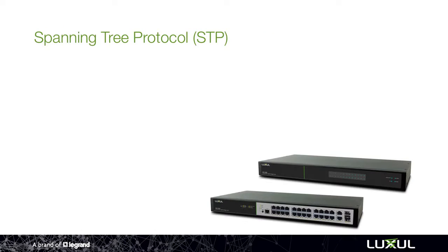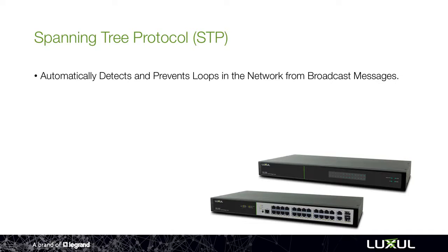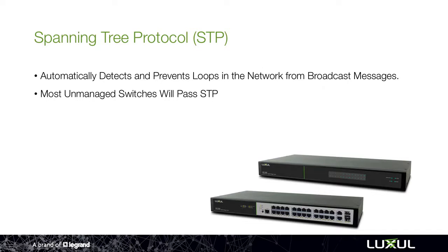What does spanning tree do and why is it important? Spanning tree automatically detects and prevents loops in the network from broadcast messages. It's a fancy network term, but it's very simple in what it actually does. With an unmanaged switch, they will pass spanning tree — meaning the switch will just pass that broadcast message along. It won't try to stop it or do anything with it; it just passes it along as a normal unmanaged switch would.